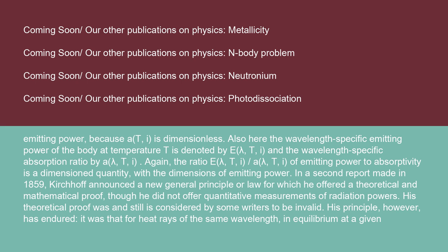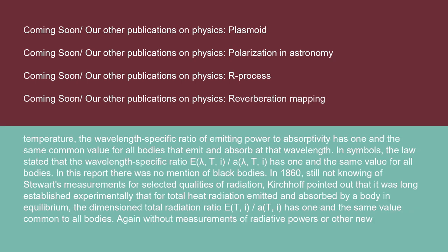It was that for heat rays of the same wavelength in equilibrium at a given temperature, the wavelength-specific ratio of emitting power to absorptivity has one and the same common value for all bodies that emit and absorb at that wavelength. In symbols, the law stated that the wavelength-specific ratio E(λ,T,i)/A(λ,T,i) has one and the same value for all bodies. In this report, there was no mention of black bodies. In 1860, still not knowing of Stewart's measurements for selected qualities of radiation, Kirchhoff pointed out that it was long established experimentally that for total heat radiation emitted and absorbed by a body in equilibrium, the total radiation ratio E(T,i)/A(T,i) has one and the same value common to all bodies.